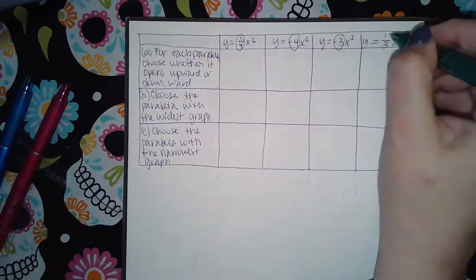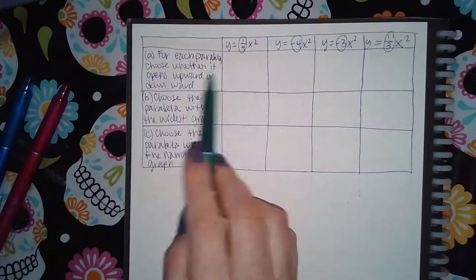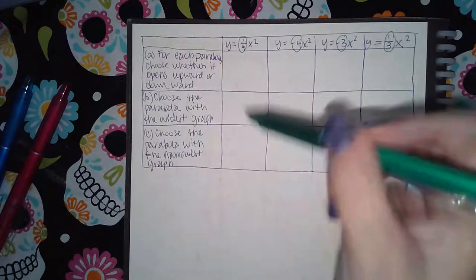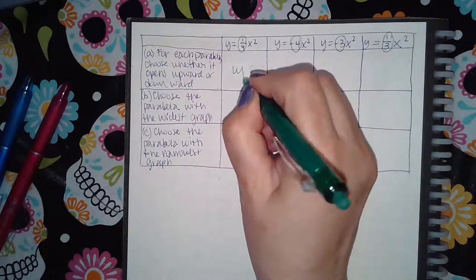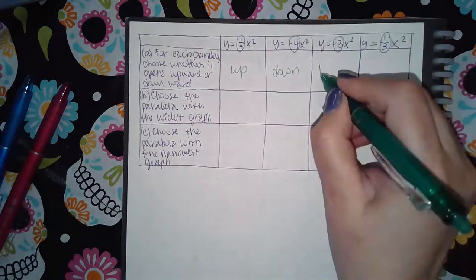For each parabola choose whether it opens upward or downward. So this one's going to open up because it's positive, this one's going to be down because it's negative, down because it's negative, and then up because it's positive.